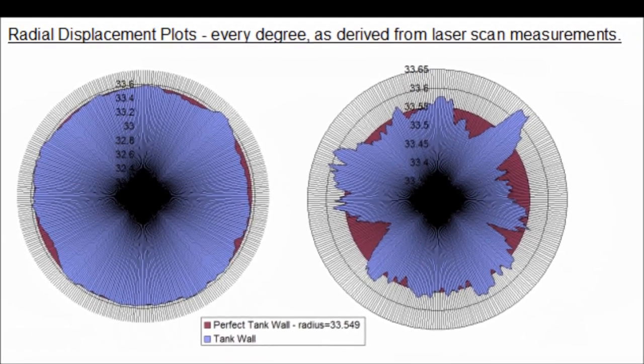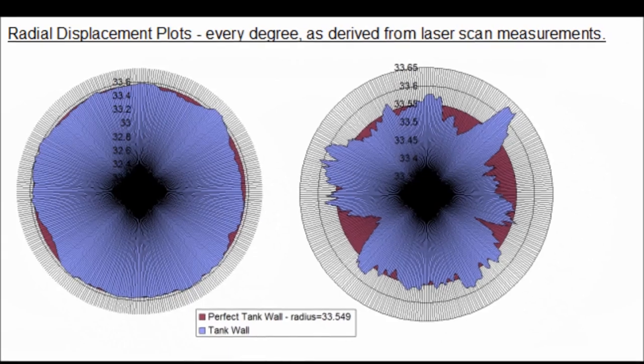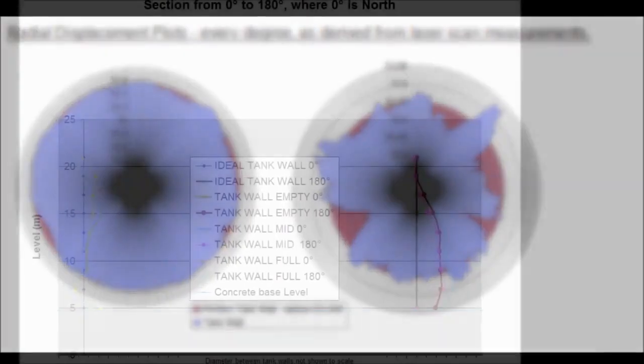In this case, the largest deviations are approximately seven centimeters from the ideal tank shell.